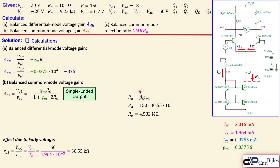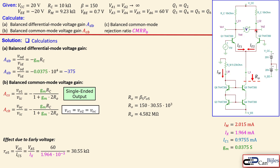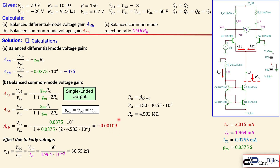Doubling the output impedance over the Wilson current source increases the common mode rejection ratio by a factor of two, or 6 dB, and decreases the common mode gain by a factor of two. Since VO1 equals VO2 — both nodes have the same potential and are in phase — measuring between them gives zero, making the balanced common mode output voltage very small. Substituting Ro into the expression yields a common mode gain of approximately minus 0.0011, which is very small compared to the differential gain.